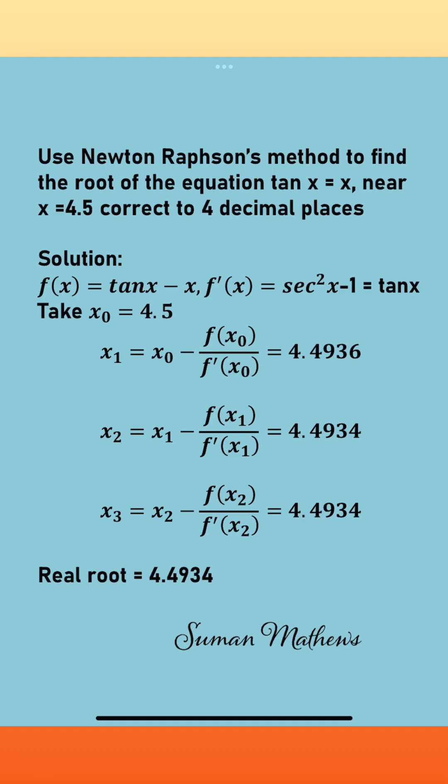Now by Newton-Raphson's method, x₁ equals x₀ minus f(x₀) by f'(x₀). So substituting these values, you get x₁ as 4.4936.